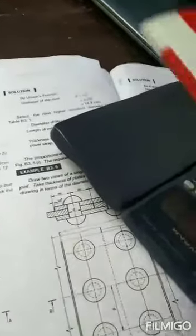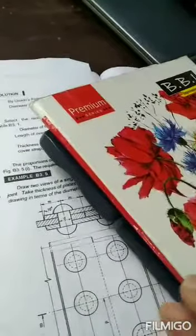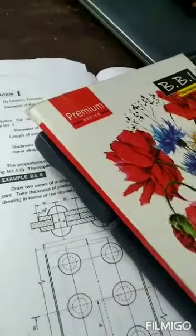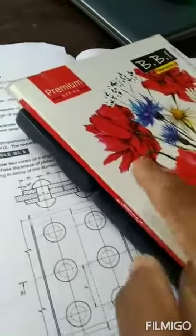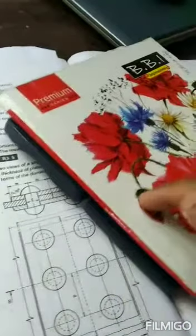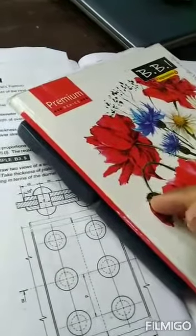As you can see, it's a joint and a rivet. It's an additional plate. This is a strap or a cover plate. This is a butt joint. This is a figure. This is a single rivet, a single strap. This is a butt joint.